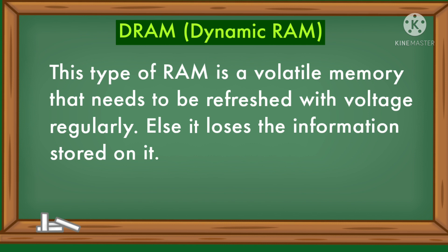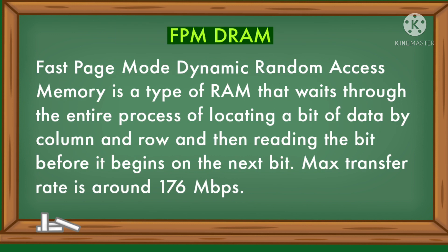FPM DRAM — Fast Page Mode Dynamic Random Access Memory — is a type of RAM that waits through the entire process of locating a bit of data by column and row, and then reads the bit before it begins on the next bit. Its maximum transfer rate is around 176 Mbps.